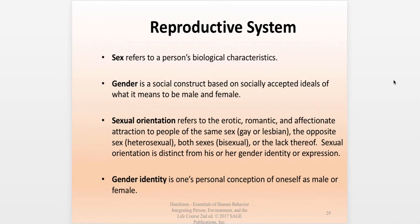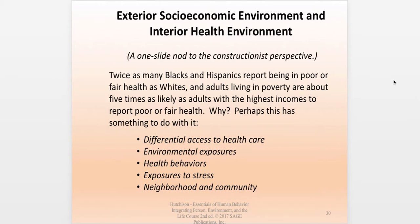Sexual orientation refers to the attraction we experience to other people — erotic, romantic, affectionate — whether of the same sex, opposite sex, both sexes, or the lack of attraction. It is distinct from gender identity and from sexual expression. Gender identity is defined as one's personal conception of oneself as male or female. That brings us to the end of the systems perspective, and we have one slide to give a nod to the constructionist perspective.